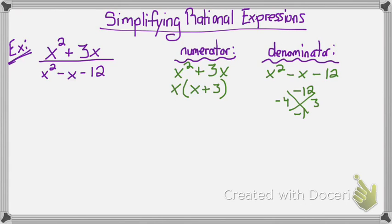Therefore, when I write it out in factored form, it will be x minus 4 times x plus 3.